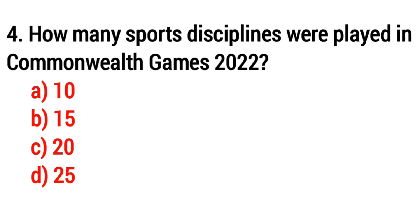Question number four: how many sport disciplines were played in Commonwealth Games 2022? The answer is option C, 20.